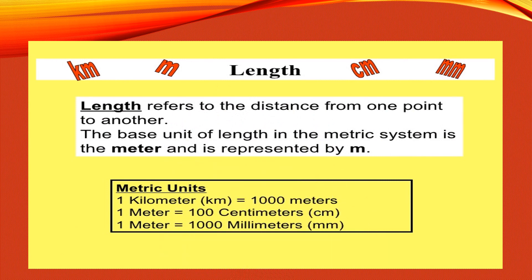Length refers to the distance from one point to another. The base unit of length in the metric system is the meter, represented by m. One kilometer has one thousand meters — meaning one thousand meters make one kilometer. One meter is equal to one hundred centimeters — meaning one hundred centimeters make one meter. And one meter is equal to one thousand millimeters.